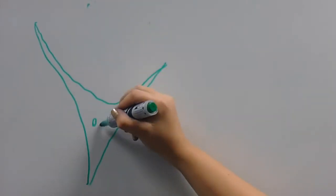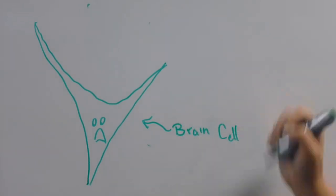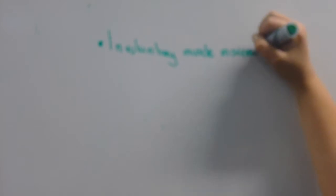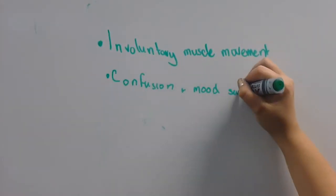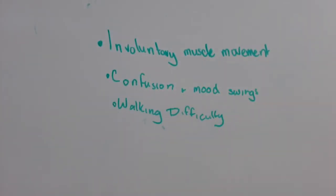Through a process scientists don't yet understand, misfolded prion protein destroys brain cells. Resulting damage leads to rapid decline in thinking and reasoning, as well as involuntary muscle movements, confusion, difficulty walking, and mood changes.